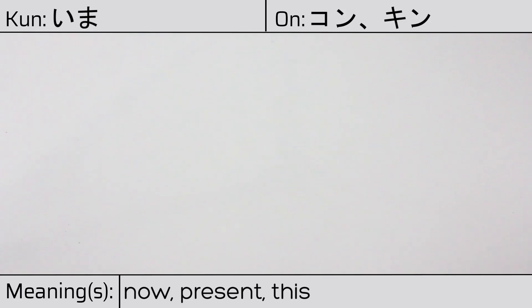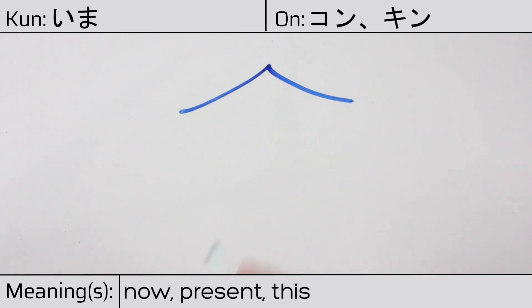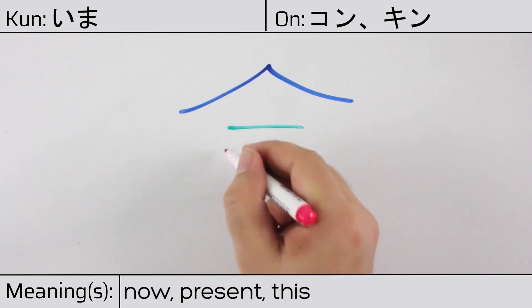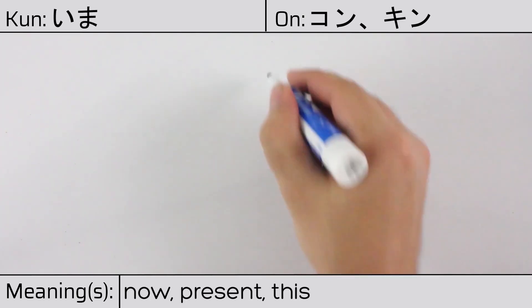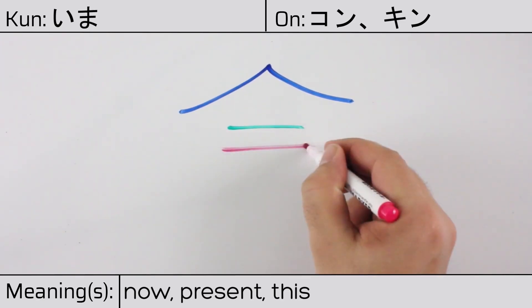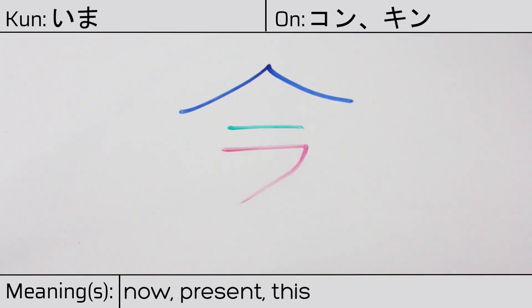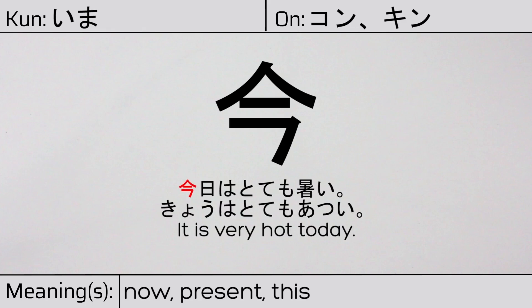This character is made up of the following radicals or parts: person or hitoyane at the top, followed by kanji ichi and katakana fu. You can remember this kanji by the following hint: this character is the first four strokes of meishi — one must eat now to live tomorrow. Our example sentence is: Kyou wa tottemo atzui — It is very hot today.